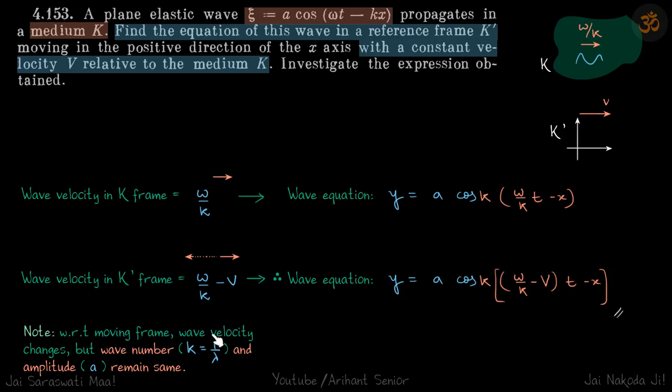So we can note that with respect to moving frame, wave velocity changes. So it changed from ω/k to ω/k - v. But wave number, that is 1/λ, and amplitude a remain same. So that's why there's no change in a and there's no change in k.